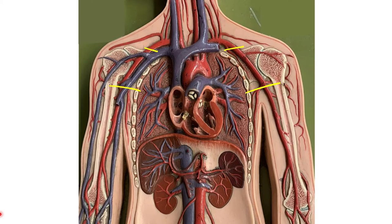Oxygenated blood is going to be pumped out of the left ventricle into the ascending aorta, which is then going to curve off towards the left side of the body and become the aortic arch. There are three main arterial branches that emerge from the aortic arch: the first is the brachiocephalic trunk, the second is the left common carotid artery, and the third is the left subclavian artery.